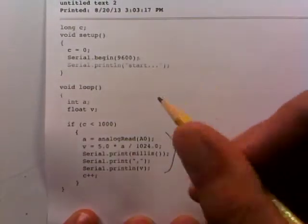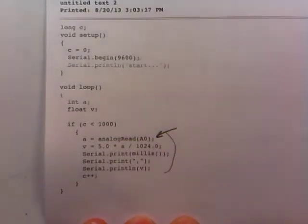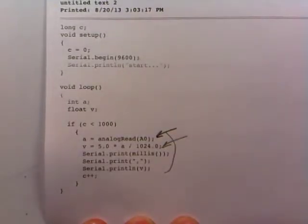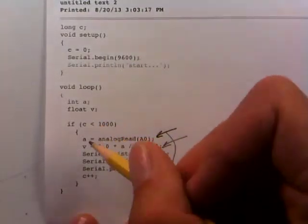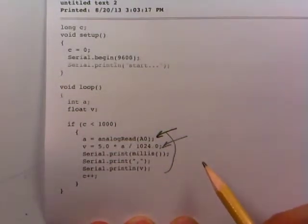The core right here is about what we discussed earlier. Here in the variable a we're reading analog input zero, which is that center tap point on the voltage divider pendulum. We're converting it to a voltage V in this line right here so we have actual voltages out, although it doesn't matter, we could leave that out. Now the next three lines, what we're doing here is, remember we sort of need the time and the position of the pendulum.